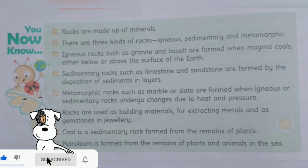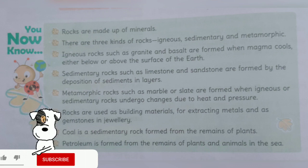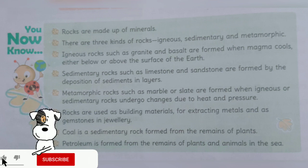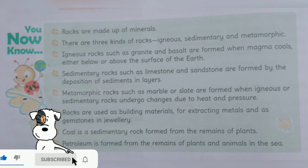Third, igneous rocks such as granite and basalt are formed when magma cools either below or above the surface of the earth. Granite or basalt jaisi igneous chaktane tab bantti hai jab magma thanda ho jata hai, ya toh prithvi ki tahat se neechay ya upar.